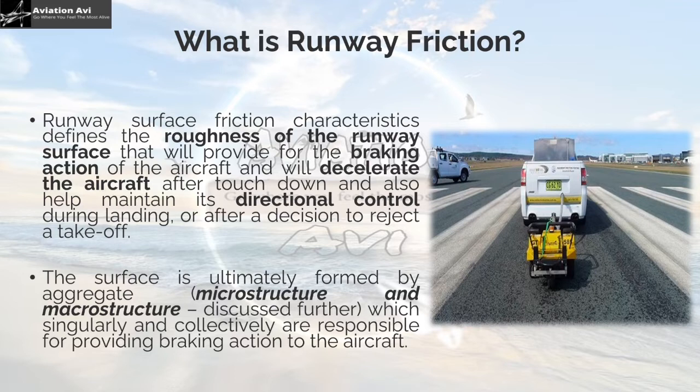What is runway friction? Runway surface friction characteristics define the roughness of the runway surface that provides braking action to the aircraft, decelerating it after touchdown and helping maintain directional control during landing or after a decision to reject a takeoff. The surface is formed by aggregate microstructure and macrostructure, which singularly and collectively are responsible for providing braking action to the aircraft.